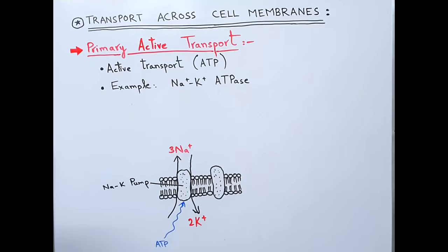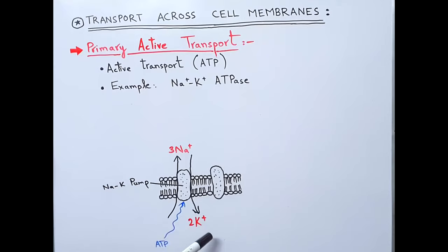Primary active transport is an active transport, which means energy is required. Metabolic energy in the form of ATP is required for this transport to occur. An example is the sodium-potassium ATPase pump, which transports 3 sodium ions out and 2 potassium ions in. ATP — metabolic energy — is used to drive this pump.